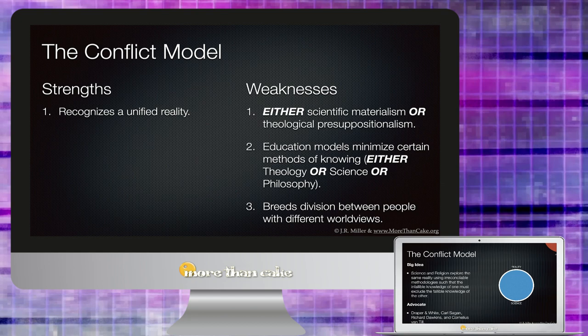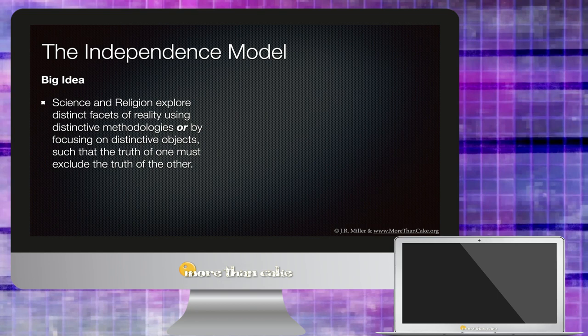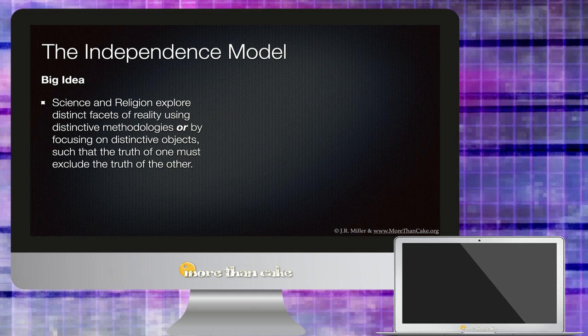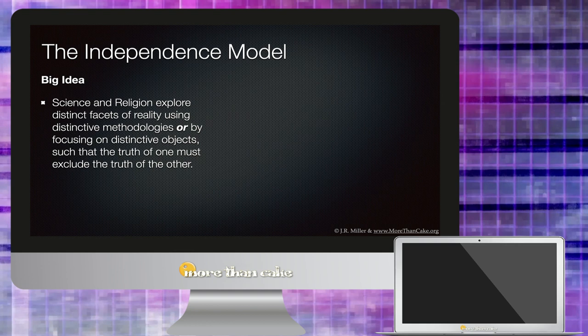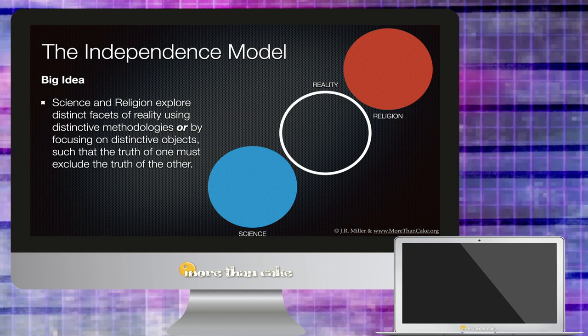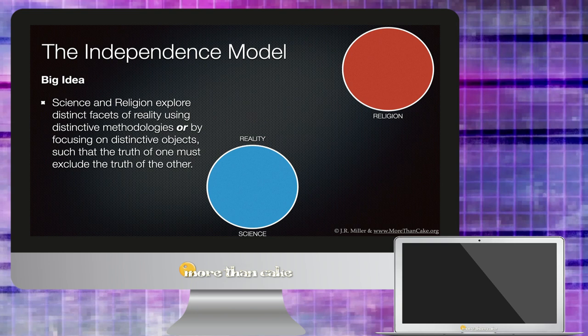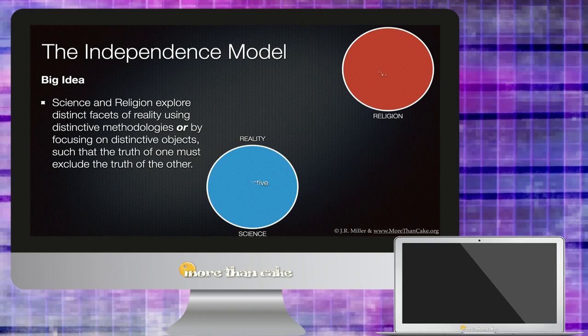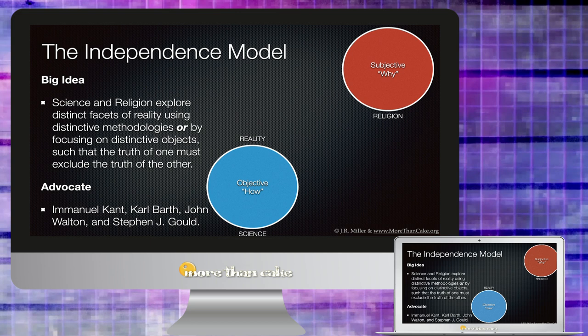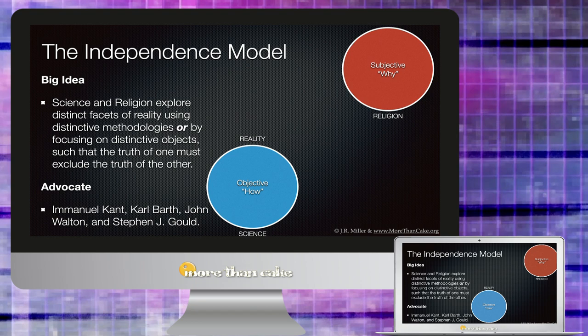The second approach we find is called the Independence Model. And the big idea here is that science and religion are said to explore distinct facets of reality using distinctive methodologies or by focusing on distinctive objects, such that the truth of one must not exclude the truth of the other. So in the Independence Model, both science and religion are said to have importance and value in understanding reality, but science for example tells us objective truths of how things happen. Religion only tells us subjective or personal truths about the reality of why things happen.